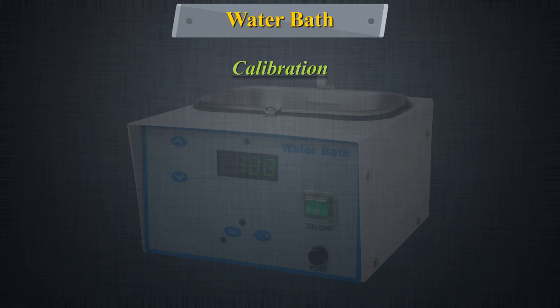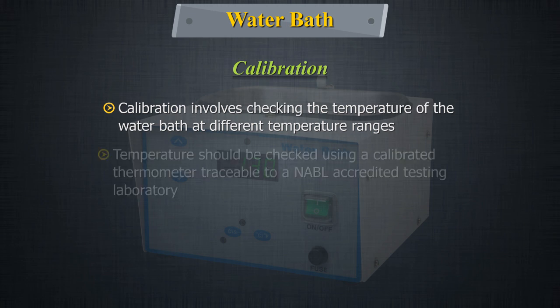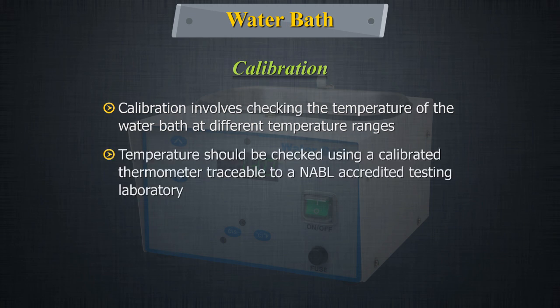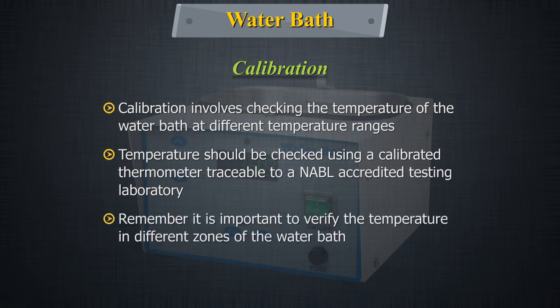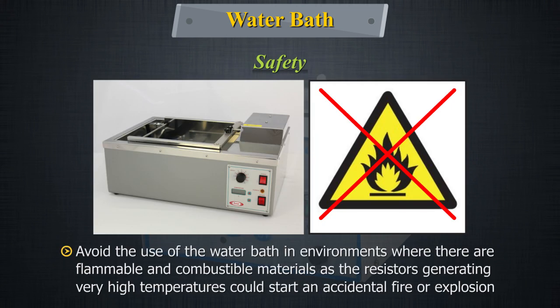Calibration involves checking the temperature of the water bath at different temperature ranges. The temperature should be checked using a calibrated thermometer traceable to an NABL accredited testing laboratory. It is important to verify the temperature in different zones of the water bath.